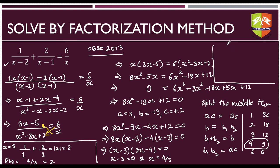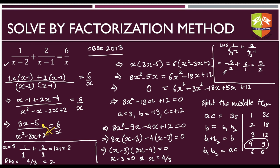Checking x equals 4/3: LHS is 1/(4/3 minus 2) plus 2/(4/3 minus 1) equals 1/(minus 2/3) plus 2/(1/3) equals minus 3/2 plus 6 equals 9/2. RHS is 6/(4/3) equals 18/4 equals 9/2. Both sides equal 9/2, so x equals 4/3 is also a valid solution. Hence both x equals 3 and x equals 4/3 are solutions to this equation.